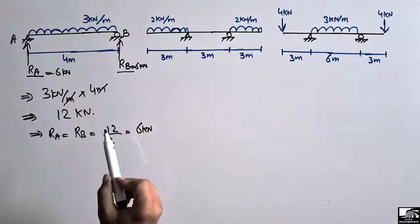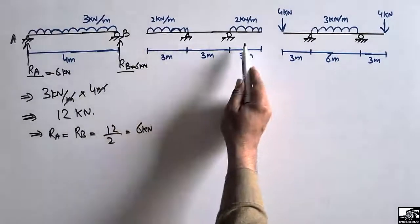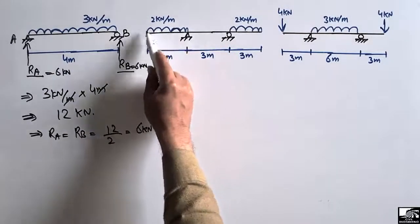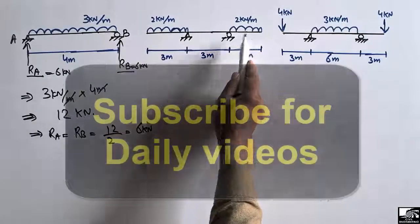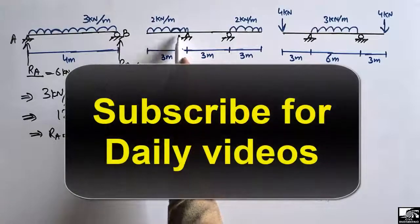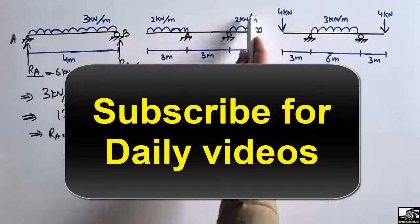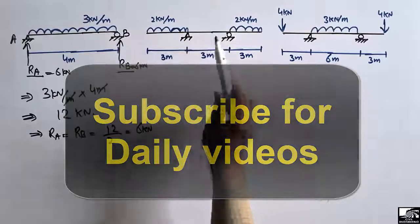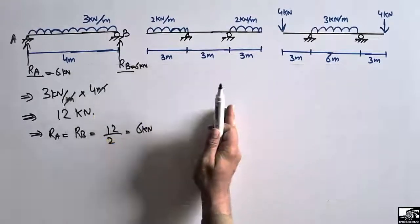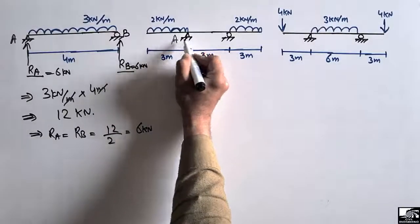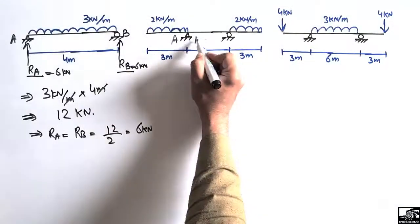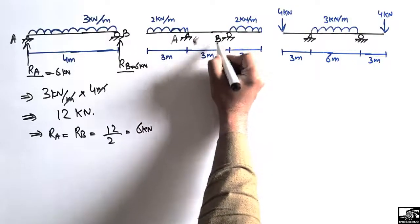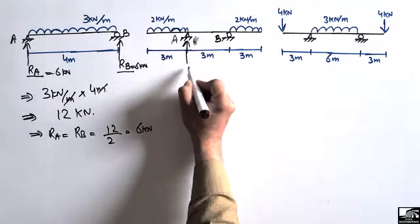Now let's consider this second example. There is also symmetric loading on this beam. Half of the load acts on one portion of the beam and the other half acts on the other portion, while in the middle portion of the beam there is no load. Let's consider support A and support B, which will resist vertical reactions RA and RB.